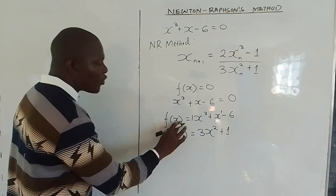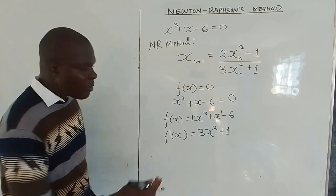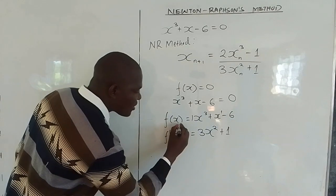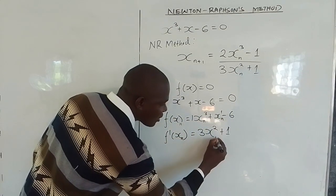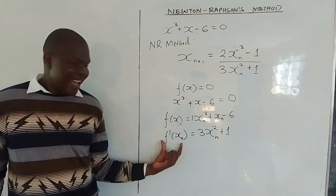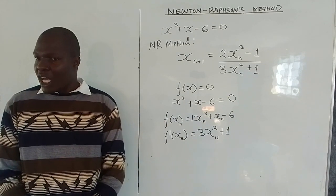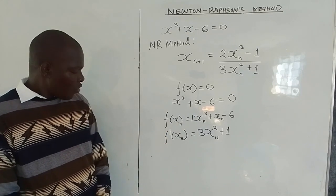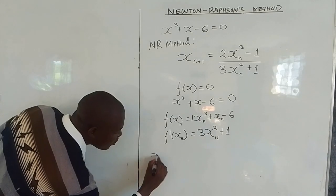Now to iterate, you must have xn. For you to iterate, wherever you see x, you simply add n to it. So we found f(xn) and f'(xn). Having found f(xn) and f'(xn), we write the Newton-Raphson method.